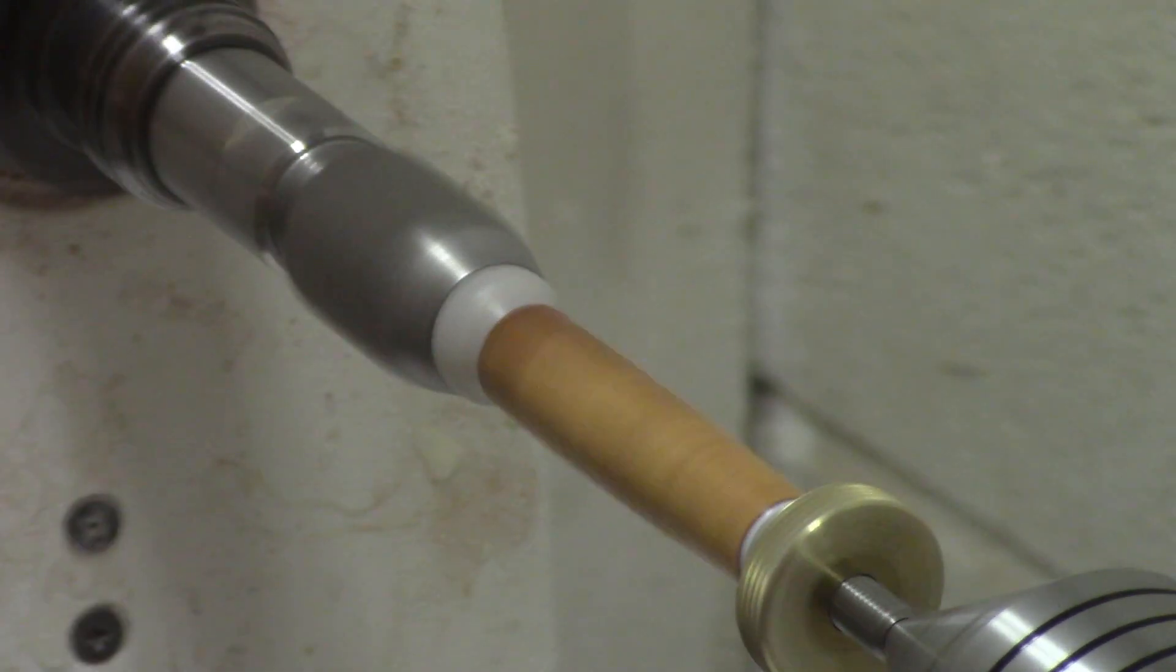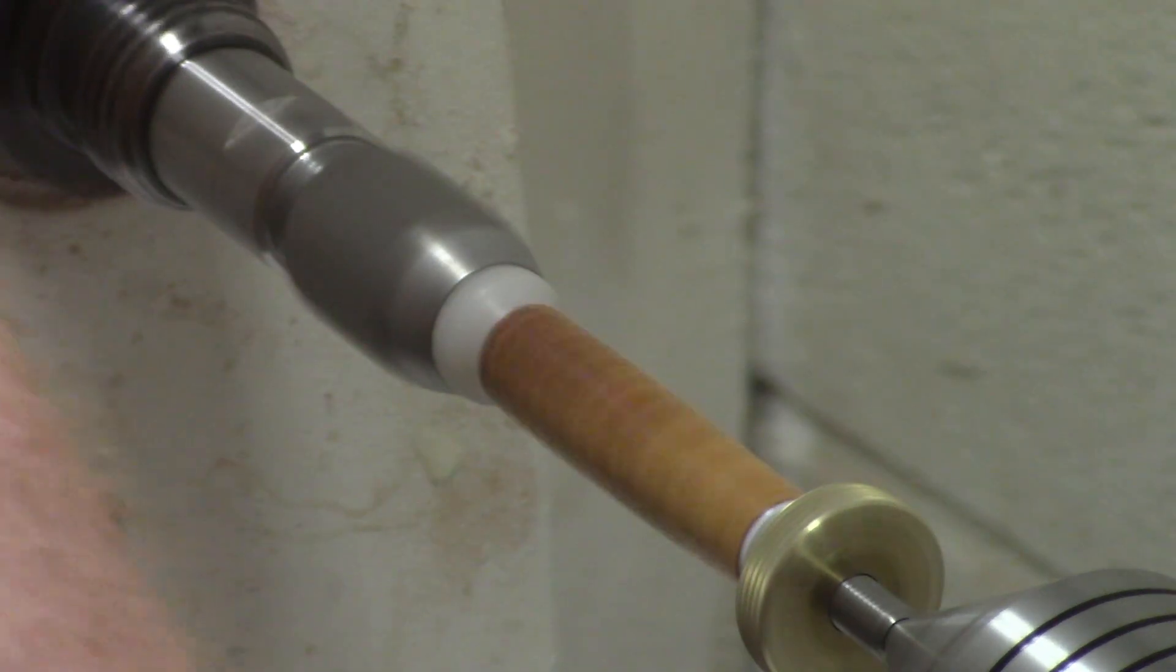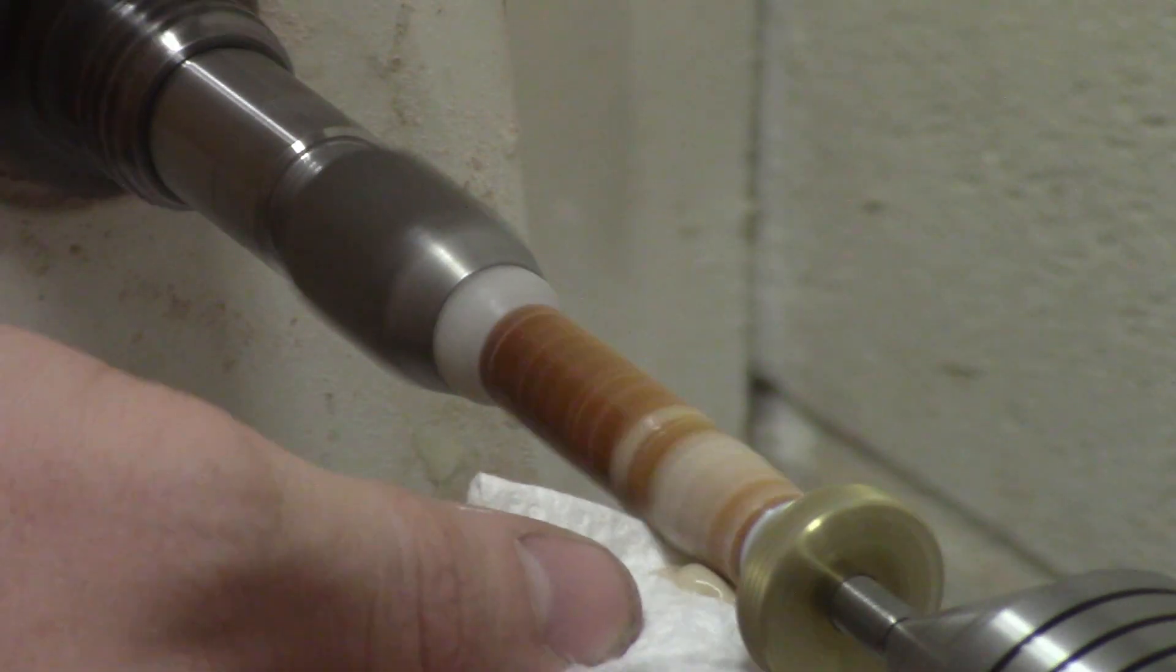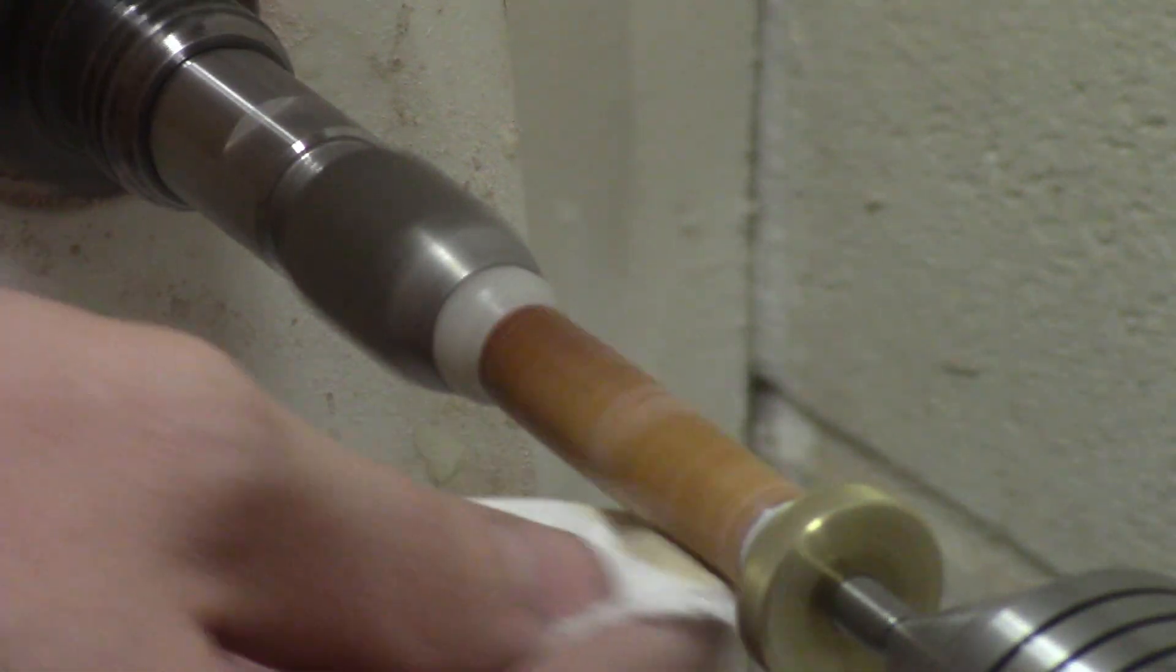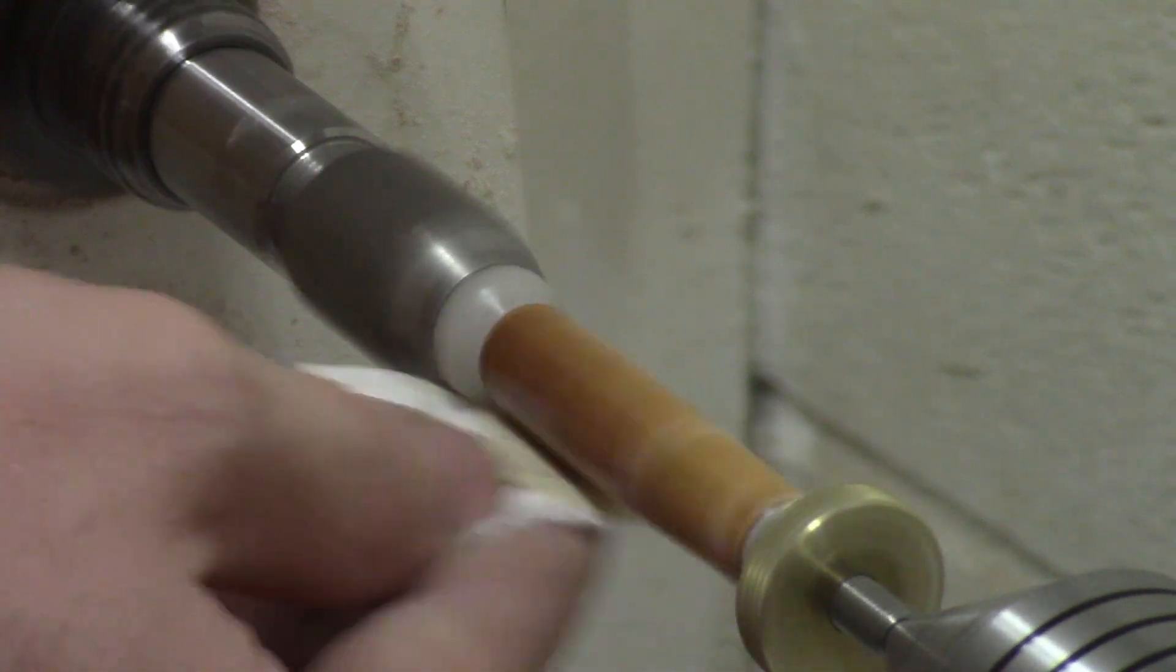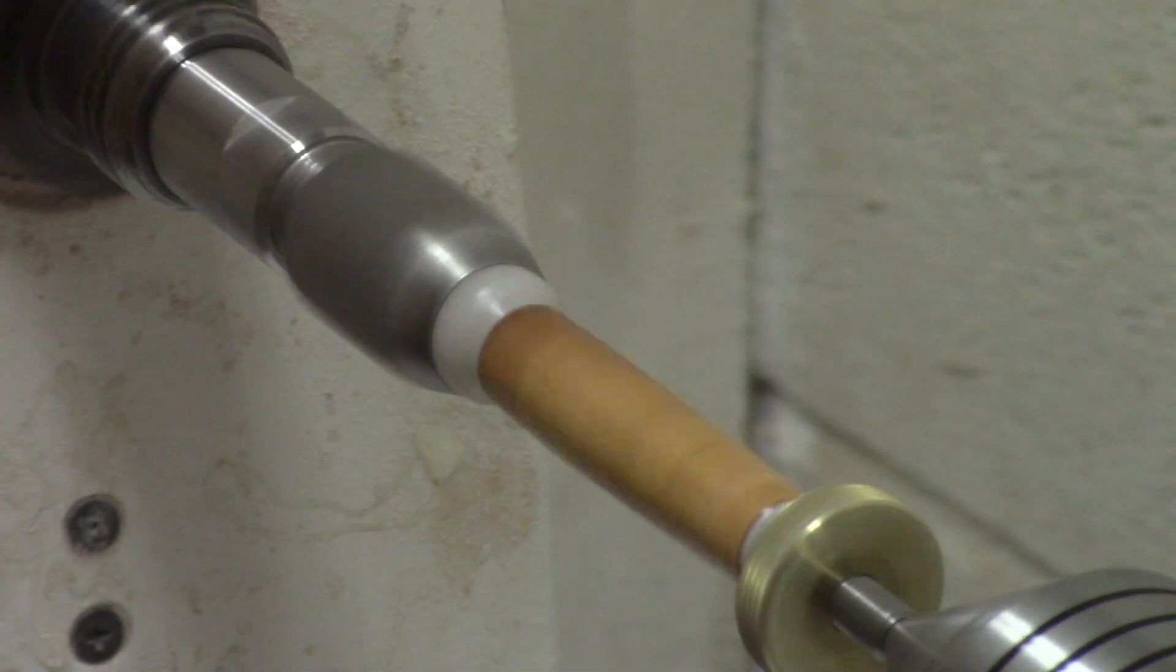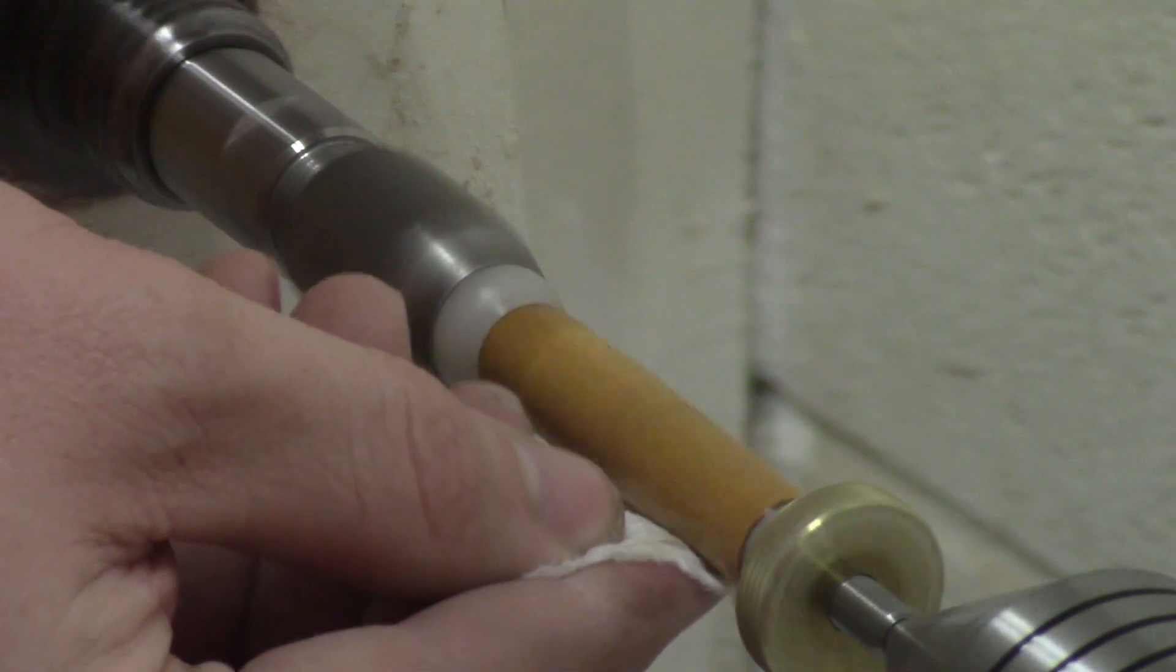Now I can move on to Novus 2, which is our fine scratch remover. I take another piece of paper towel, put some Novus 2 on it. Novus 3 was a white color, Novus 2 is more of a brownish color. I apply Novus 2 the same exact way we applied Novus 3, work it in until it's virtually gone. Then I take a clean dry section of paper towel and wipe it off, buff it in.